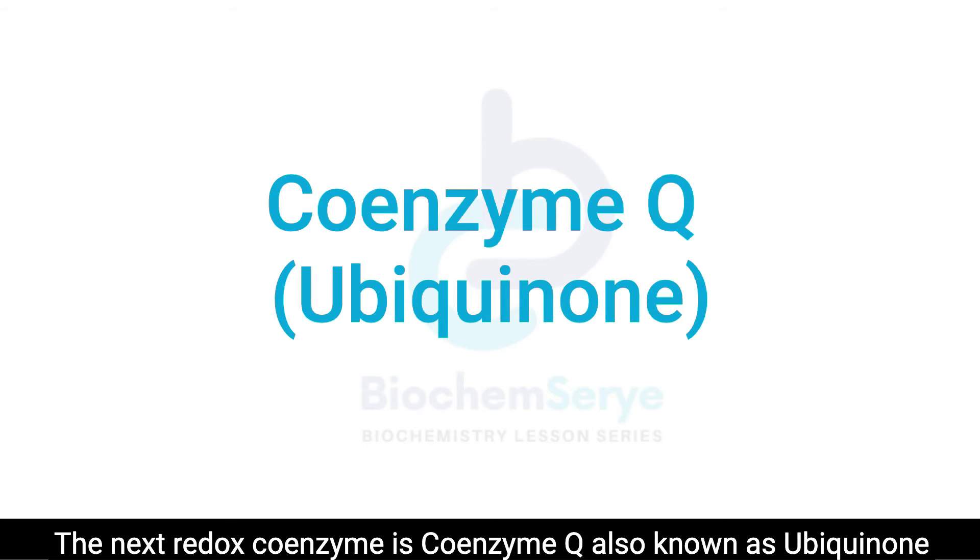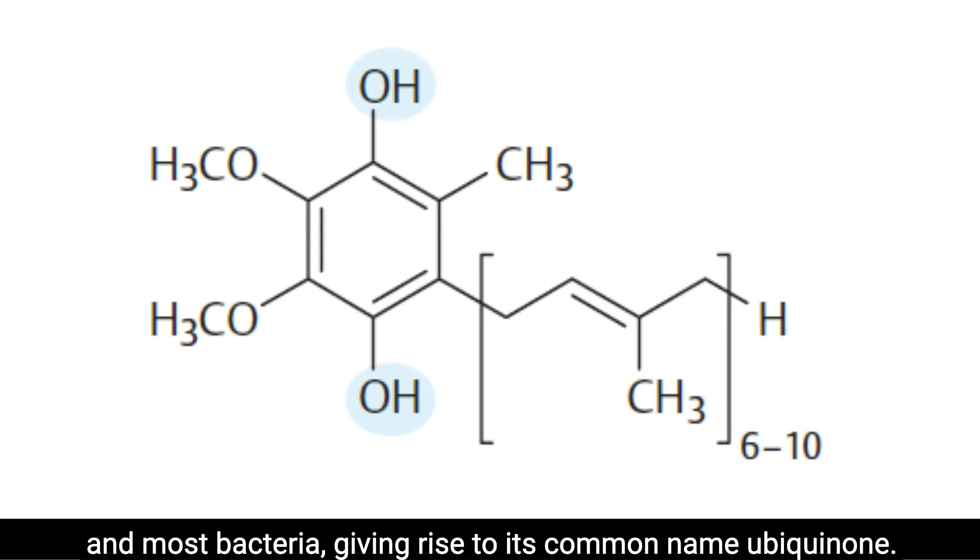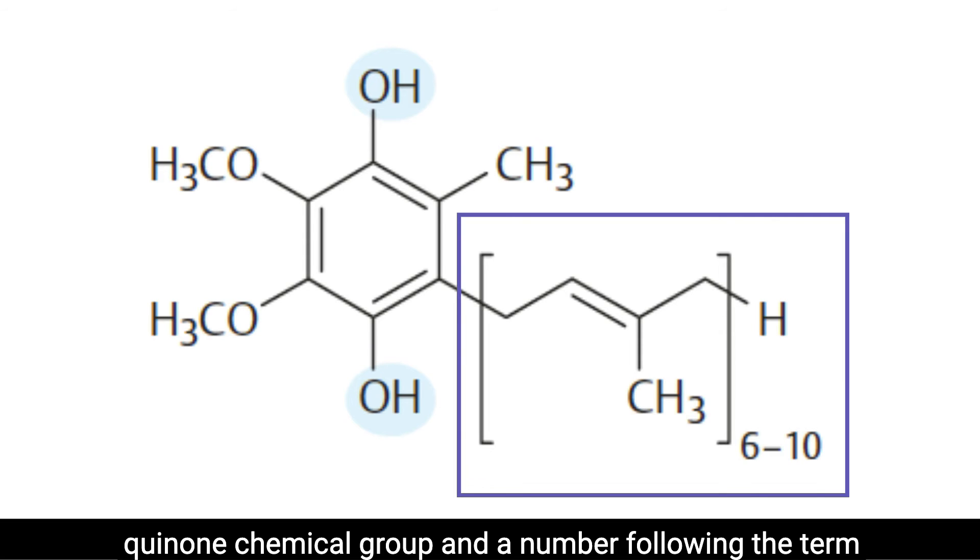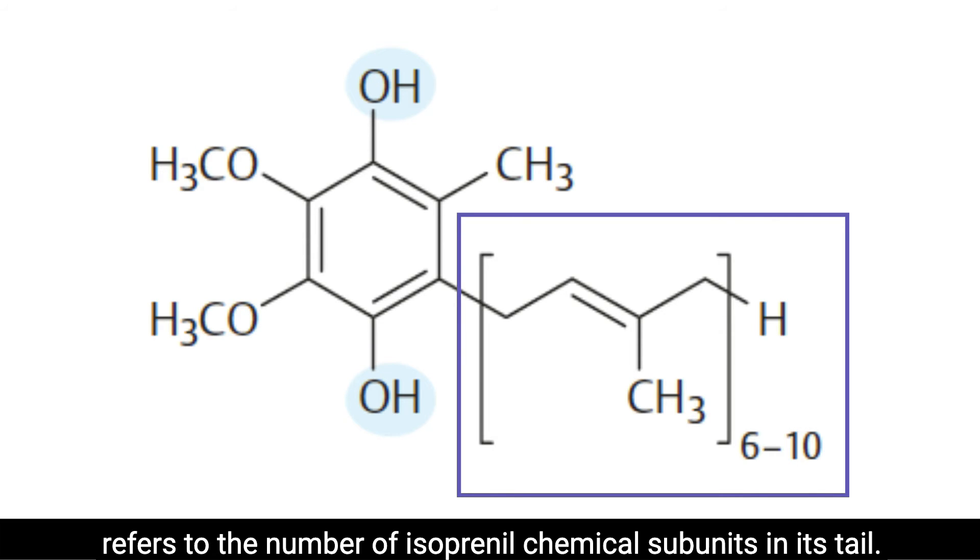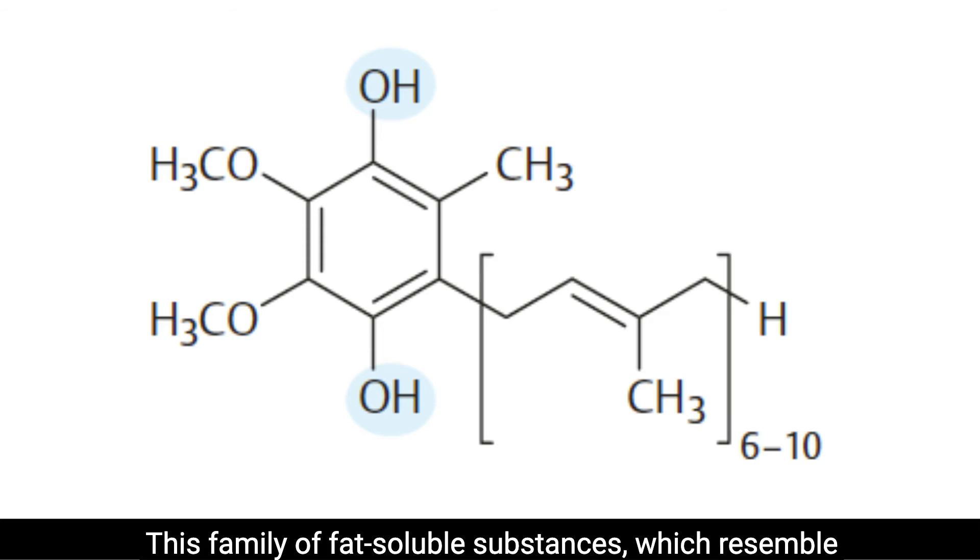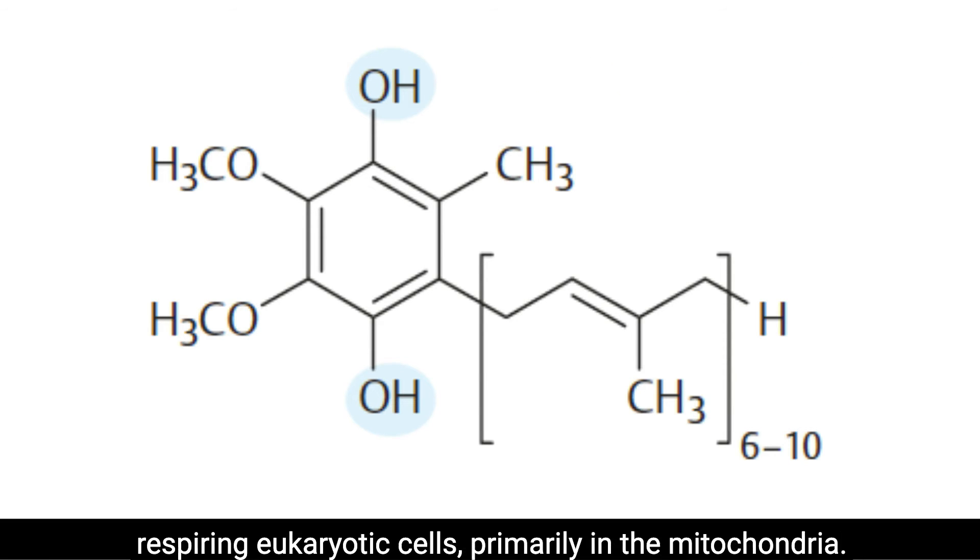The next redox coenzyme is coenzyme Q, also known as ubiquinone. Coenzyme Q is a coenzyme family that is ubiquitous in animals and most bacteria, giving rise to its common name ubiquinone. Coenzyme Q is a 1,4-benzoquinone, where Q refers to the quinone chemical group and a number following the term refers to the number of isoprenyl chemical subunits in its tail. In natural ubiquinones, the number can be anywhere from 6 to 10. This family of fat-soluble substances, which resemble vitamins but are not sourced from them, is present in all respiring eukaryotic cells, primarily in the mitochondria.